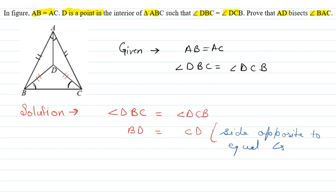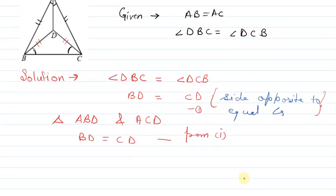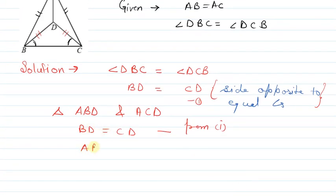This is the property I will use. Now I will talk about triangle ABD and triangle ACD. Here I have: BD is equal to CD — from the first result. AB is equal to AC — this is given in the question. And AD is equal to AD — this is common.